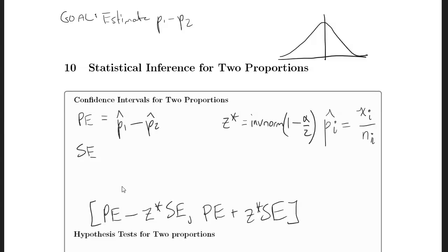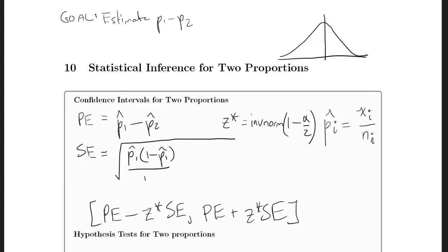So if you want a 95% confidence interval, that's 1 minus half of 5%. The standard error is the square root of p̂1 times (1 minus p̂1) over n1, plus p̂2 times (1 minus p̂2) over n2, because the variance of a difference of two normal distributions is the sum of their variances.